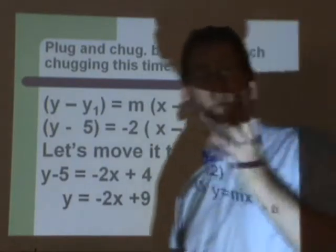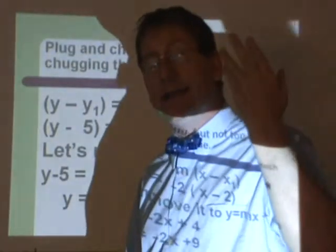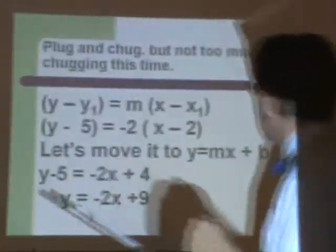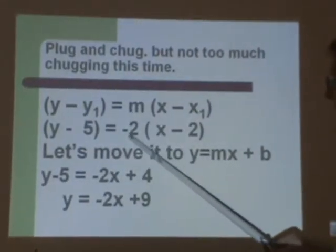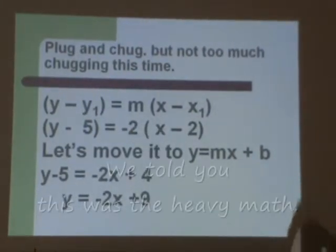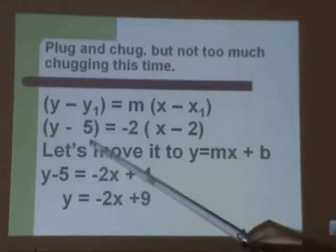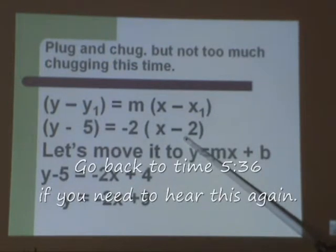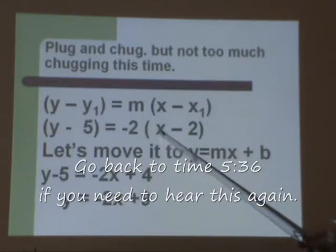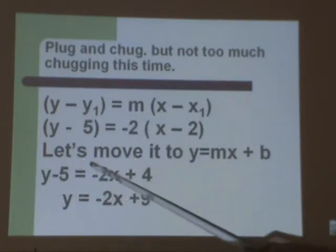And we figured our slope, since it's a negative reciprocal of the original line, we got a negative 2 for our slope. Slope goes in where the m goes, negative 2. Now all we have to do is move the 5 over to the other side, do the math, distributed property, and we can move this into a y equals mx plus b format.